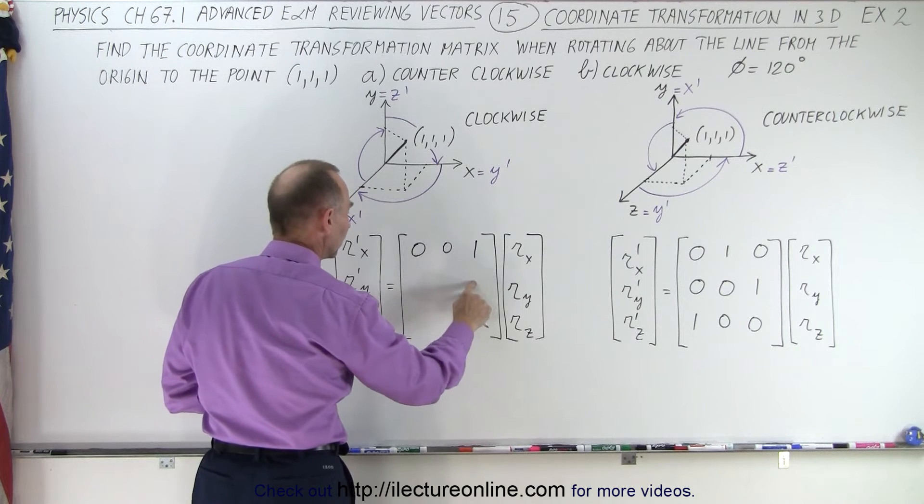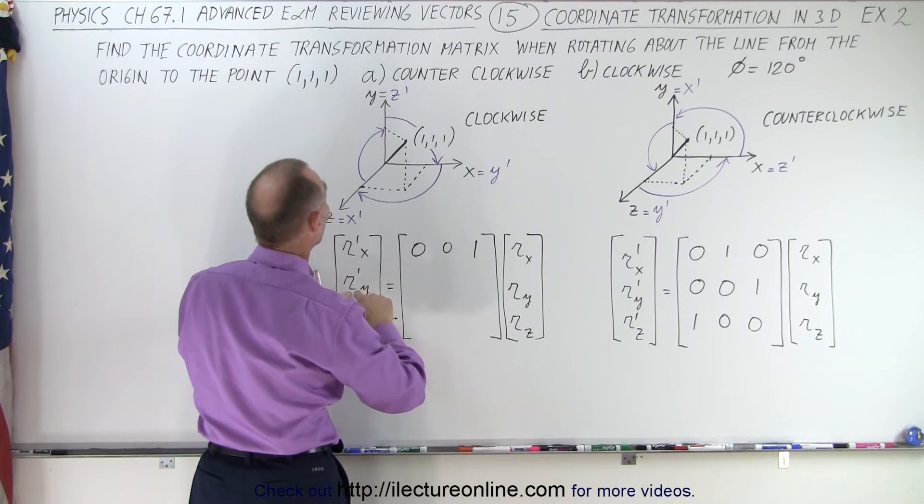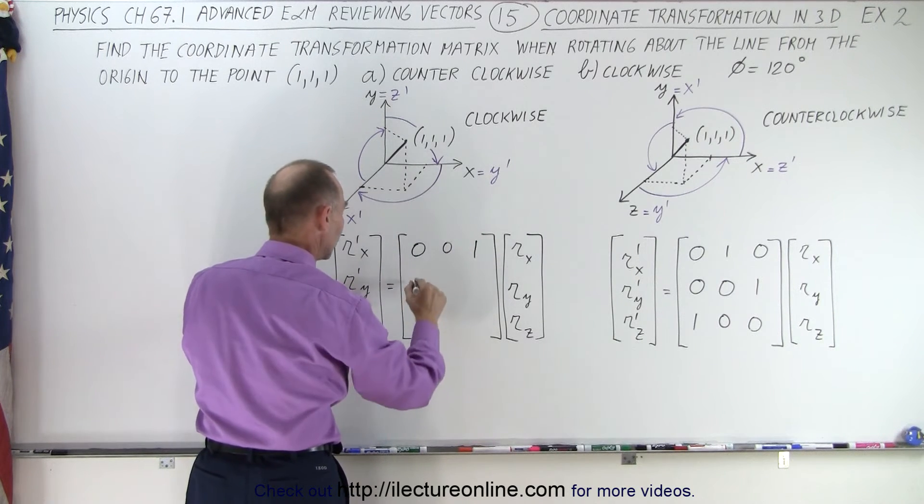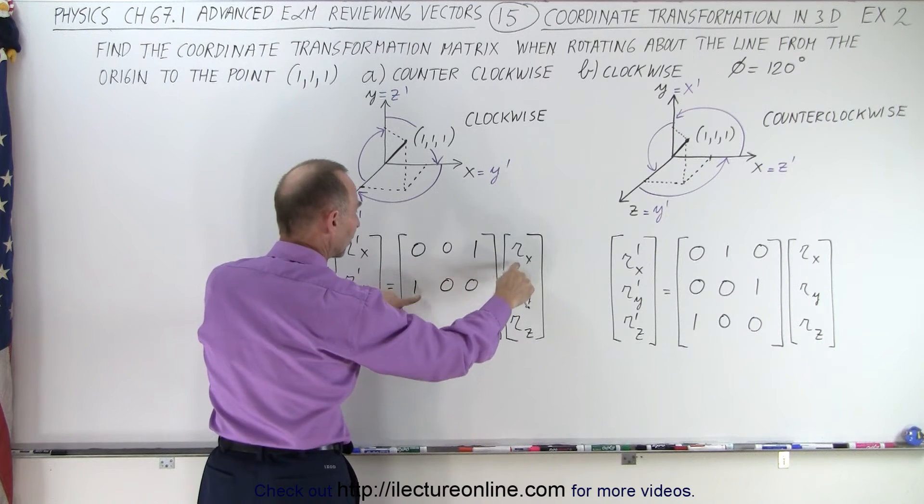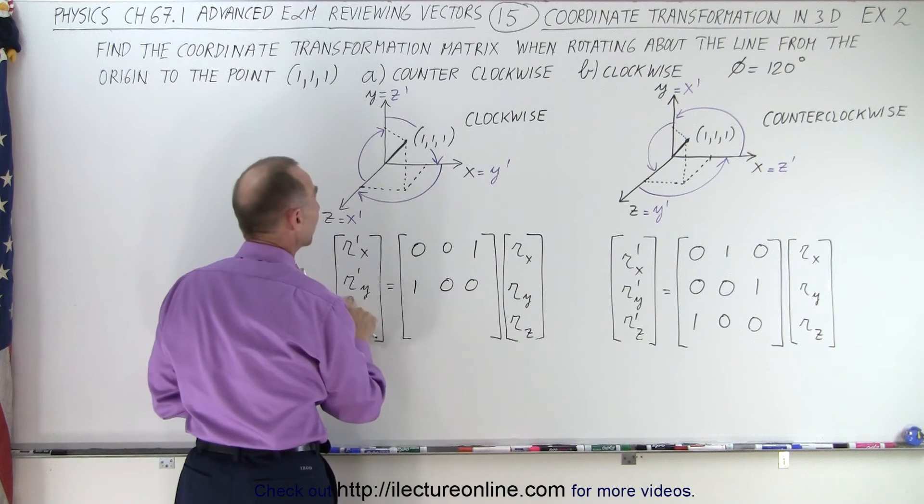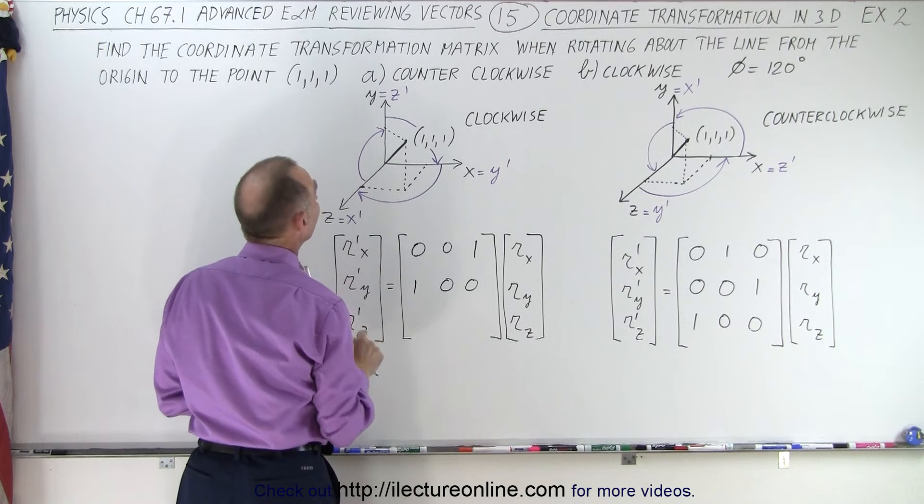Then I want the next one here. I want RY prime to be X. So I need a 1 here, a 0 and a 0. So RX plus 0 plus 0 gives me RY prime. X equals Y prime.